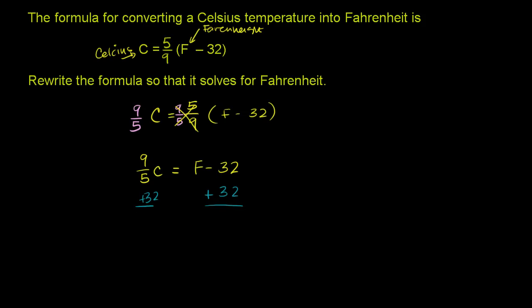The left-hand side now becomes 9 fifths times the Celsius temperature plus 32, and that's going to be equal to this negative 32 and positive 32 canceled out. That was the whole point behind adding 32. So it's just going to be equal to F.